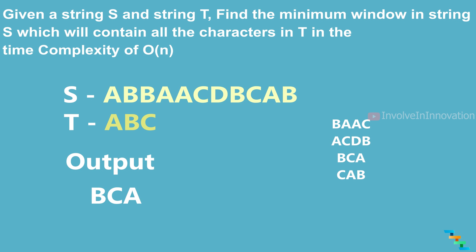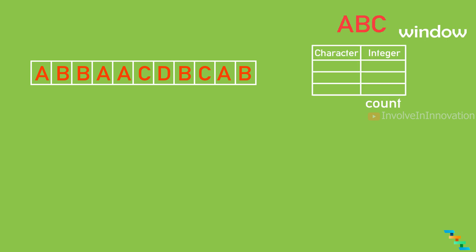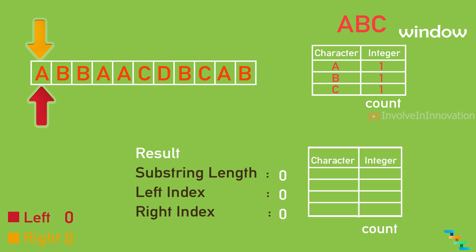We will see the pseudocode. First, load all the characters of string t into a hash table named 'window', where the characters denote the key and the value denotes the character occurrence, and count the number of entries in the hash table. Point the left and right pointers to the zeroth index position in string s. Get the character value from the right pointer index position and add it to a new hash table named 'minimum window'. Then check whether all the characters and their count in the window hash table are matching with the minimum window hash table.